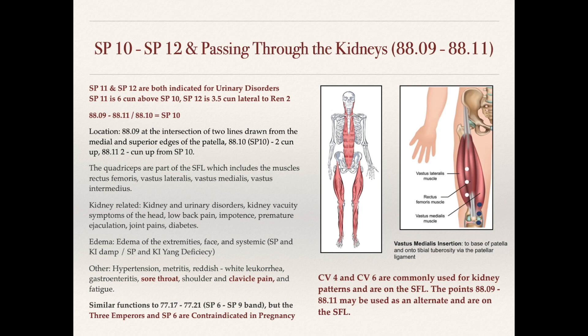These points are also indicated for gastroenteritis and sore throat — again, we can follow these lines up to see how these muscle groups form fascial lines. In TCM protocols, CV4 and CV6 are commonly used for kidney patterns and are on the superficial front line. The passing through kidney points can be used instead if you don't want to do local needling. Distal needling has advantages: it's safer for patients since you won't risk puncturing an organ, and distal points produce stronger needle sensation, which typically yields stronger therapeutic results than more local needling.